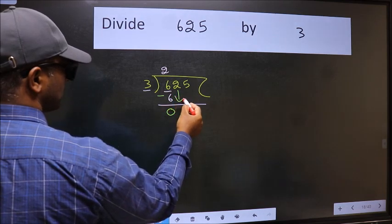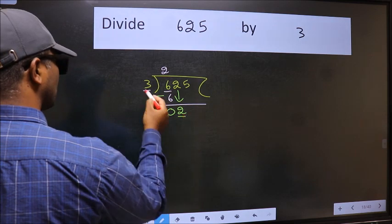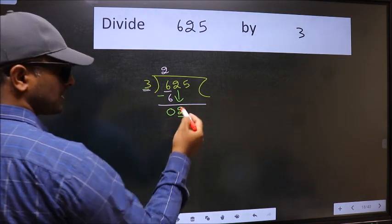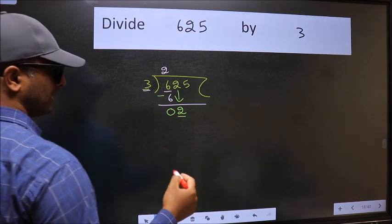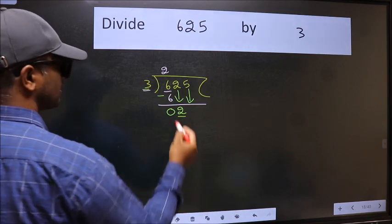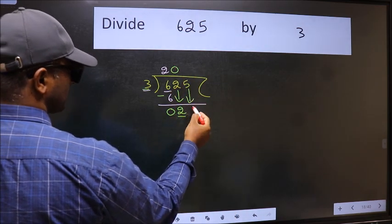After this, bring down the beside number. So, 2 down. Now here we have 2 and here 3. 2 is smaller than 3, so we should bring down the second number. And the rule to bring down the second number is we should put 0 here. Then only we can bring down this number.